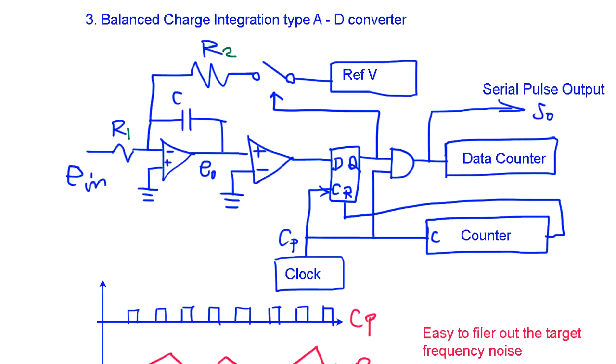What we do is we have R1, R2, and the voltage reference VR. Ein is the input data and generates E0.